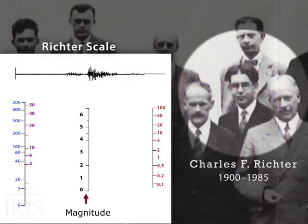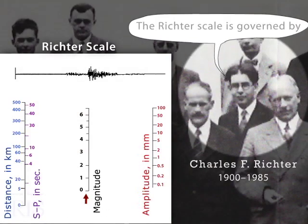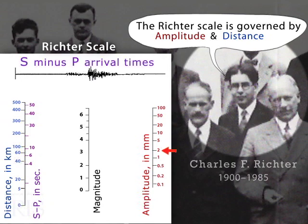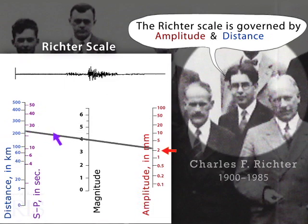Charles Richter and Benno Gutenberg developed the first magnitude scale in the 1930s to quantify earthquakes by relating the size or amplitude of seismic waves, shown on the right, plotted against distance as calculated from S minus P arrival times, shown on the left. Connecting the two gives you the Richter magnitude.